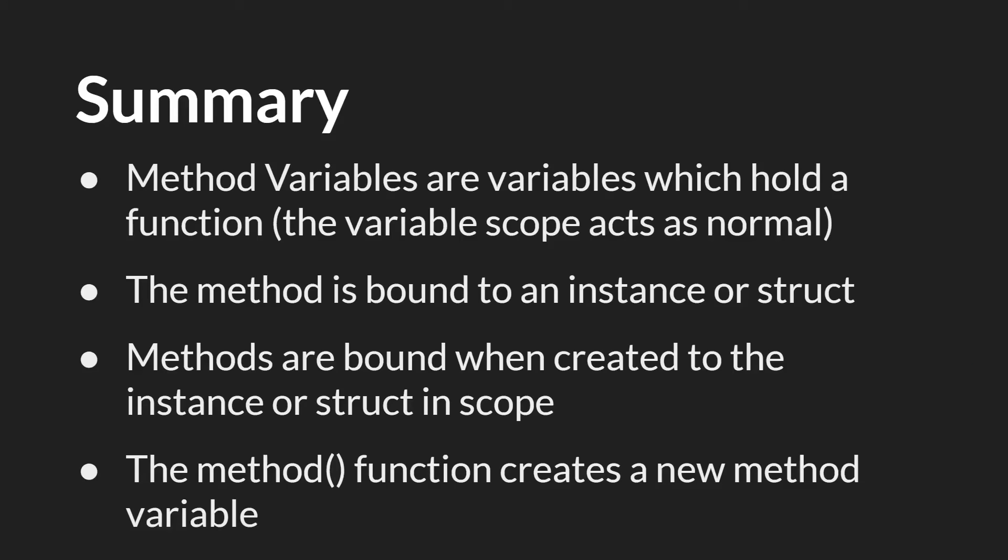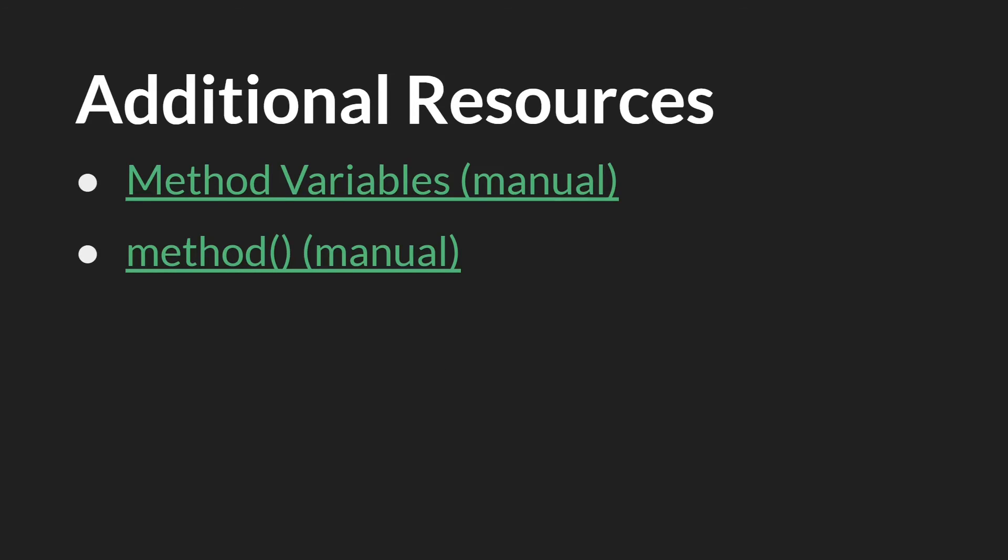In summary: method variables are variables which hold a function. Those variables have scope and that scope acts as normal, but the method referenced by that variable is bound to either an instance or a struct. Methods are bound when created to the instance or struct currently in scope, and the built-in method function creates a new method variable bound to whatever you specify. As always, links and source code are below. Thanks for watching.